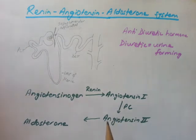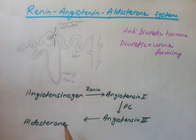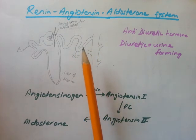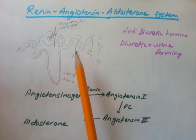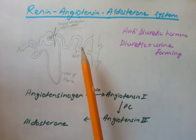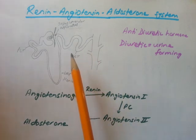Angiotensin II stimulates the adrenal cortex to release the hormone aldosterone. Aldosterone leads to conservation of water, or less excretion of water from the nephron. It does this by making the distal convoluted tubule more permeable to sodium ions, so sodium moves out of the tubule. Water then follows from the distal convoluted tubule and collecting tubule due to the osmotic gradient.